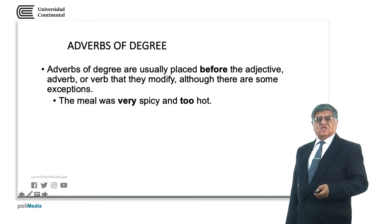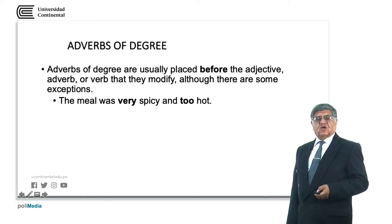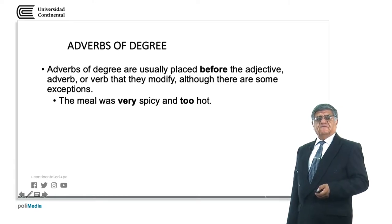The meal was very spicy and too hot. Spicy and hot are the adjectives, and very and too are the adverbs of degree. As you can see, very and too are before the adjective.